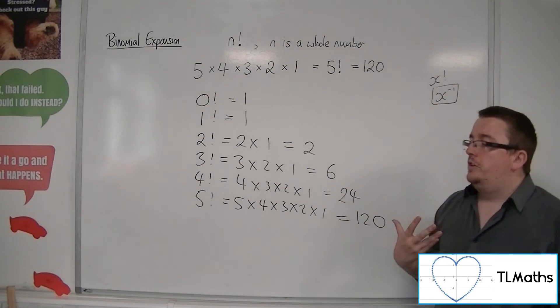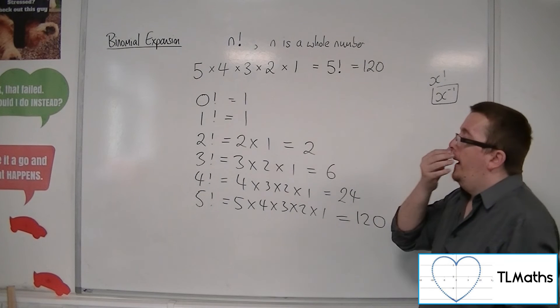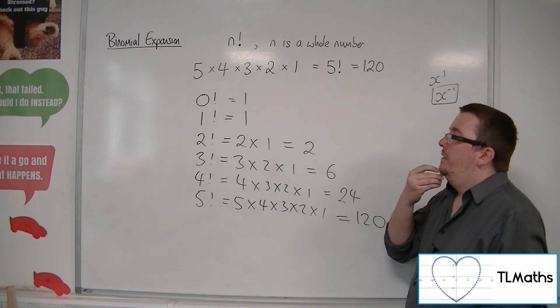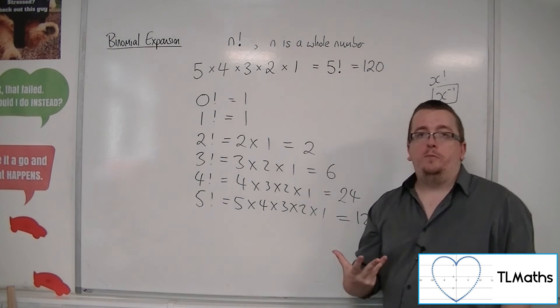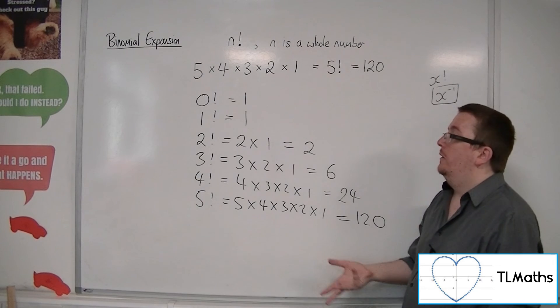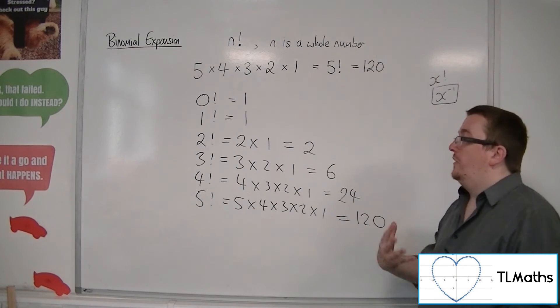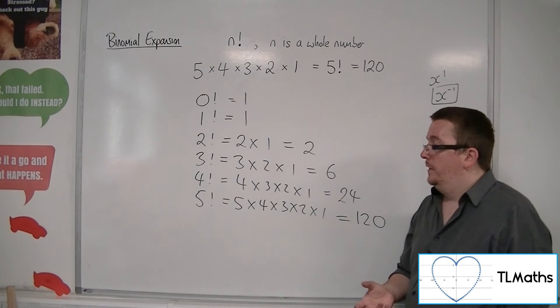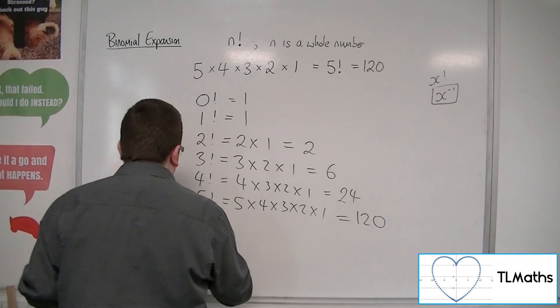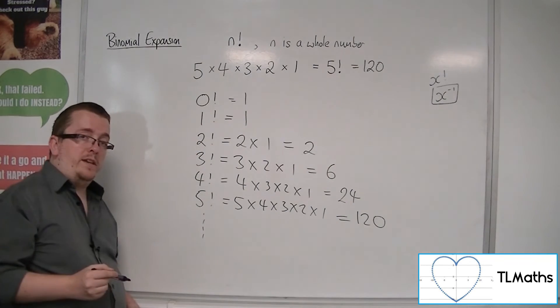And really, if you link it back to arrangements, then you can think of it as the number of ways that zero items could be picked. Well, there's only one way of doing that. So that's kind of like the worded way of doing it.